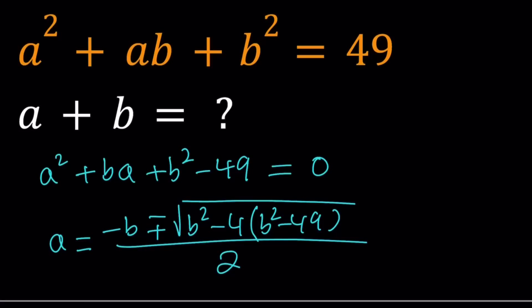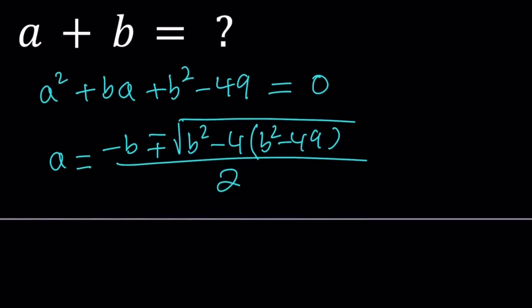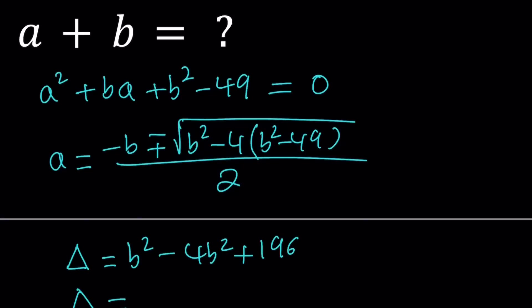Before we get into anything else, I want to look at what's under the radical, which is called the discriminant of this quadratic equation. The discriminant, delta, gives us information about whether the equation will have real roots and the nature of those roots. Delta is the expression inside the radical: b squared minus 4b squared plus 196. Simplifying, b squared minus 4b squared is negative 3b squared, so delta equals 196 minus 3b squared.